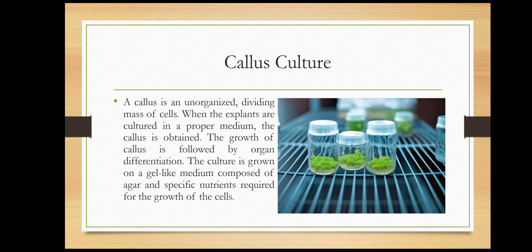The next type is callus culture. A callus is an unorganized dividing mass of cells. When the explants are cultured in a proper medium, the callus is obtained. The growth of the callus is followed by organ differentiation. The callus is grown on a gel-like medium composed of agar and specific nutrients required for the growth of the cells, and this medium includes growth factors also.